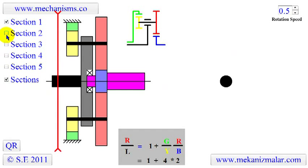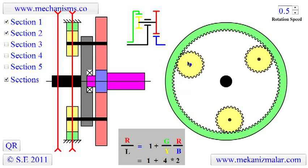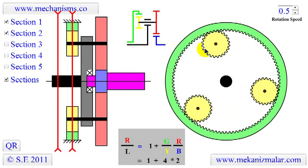The first section shows the cross section of the input shaft. Here, the red line shows where the section has been cut. The second section shows the green annulus ring and yellow planets.